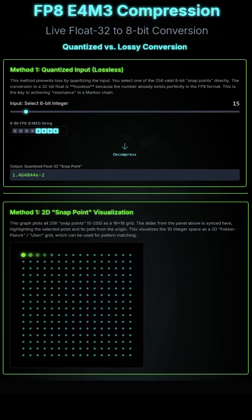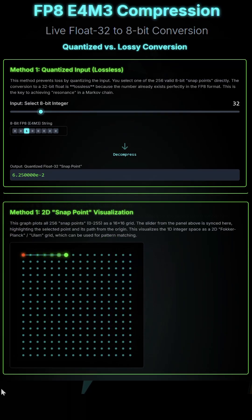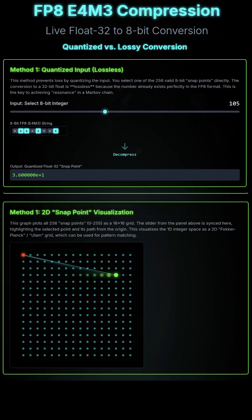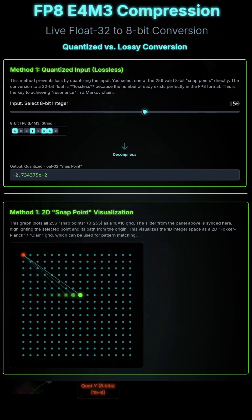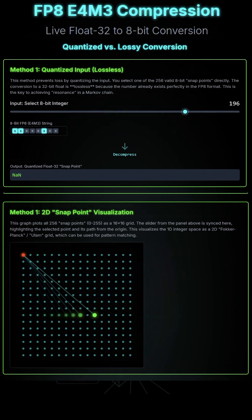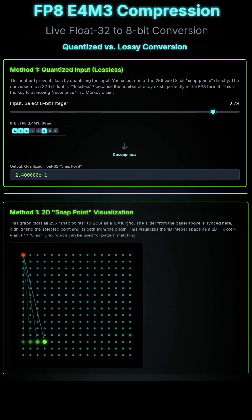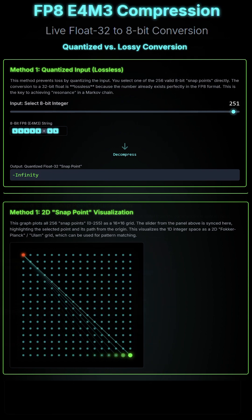Mode 2 is a Fokker-Planck 16x16 Snap Grid quantized input method. This limits your input to a geometric lattice structure per variable. These can scale perfectly with prime number sieves.